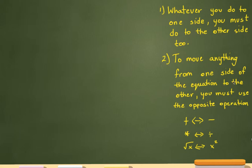Second, to move anything from one side of the equation to the other, you must use the opposite operation. So, opposite of addition would be subtraction, multiplication would be division, and if you're doing square root on one side, the opposite side would be squaring it.